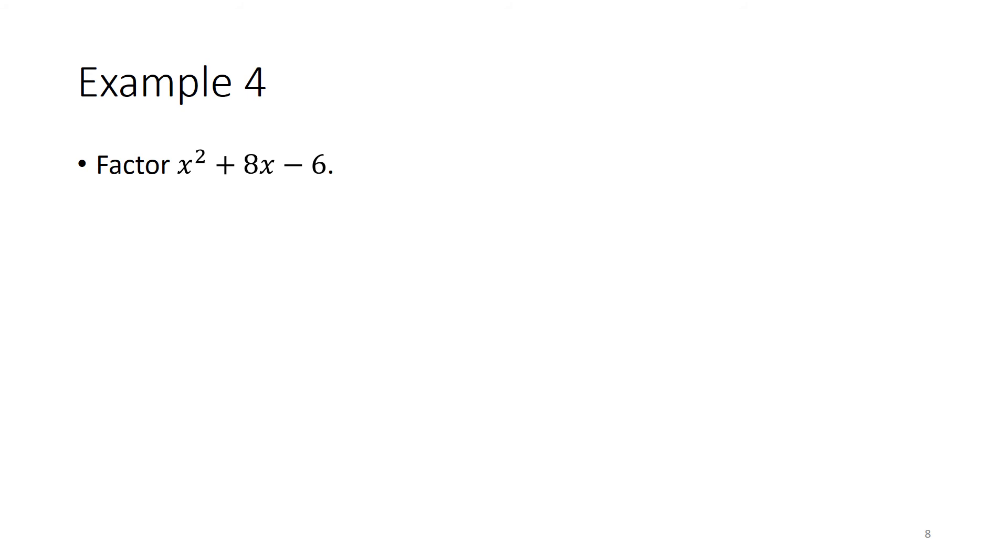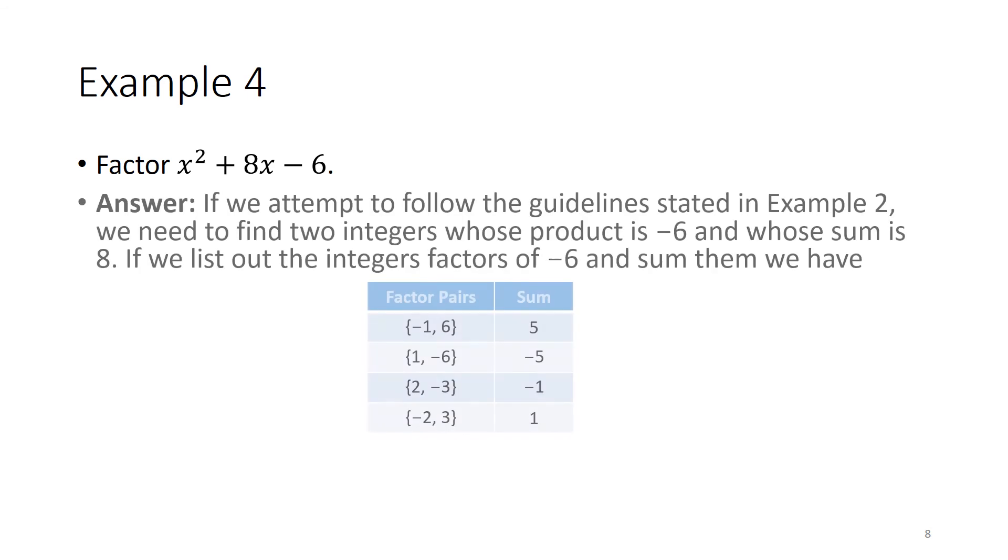Our last example asks us to factor x squared plus 8x minus 6. If we attempt to follow the guideline stated in example 2, we need to find two integers whose product is negative 6 and whose sum is 8. If we list out the integer factors of negative 6 and sum them, we have the following table.